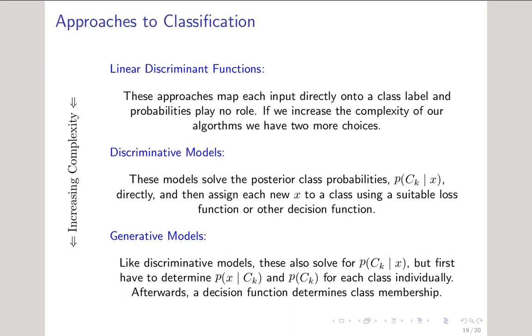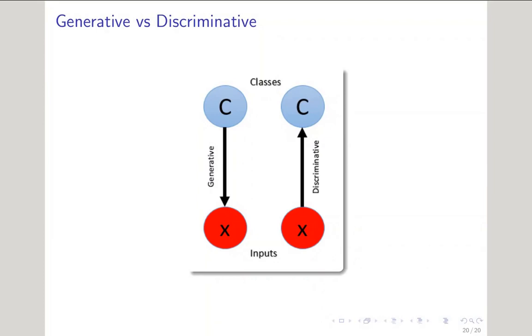So stepping up from linear discriminant functions, we have discriminant models. These probabilistic models try to model the posterior class probabilities directly, and then assign each new data point to a class based on whatever decision function they've chosen. If you move up even more in complexity, another approach is to model the posterior class probabilities, but instead of just modeling the posterior, this approach models the prior and the likelihood so that the posterior can be determined for each class individually. Then a decision function, again, decides class membership.